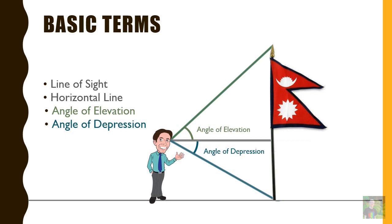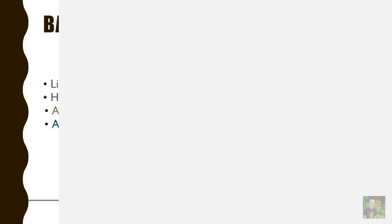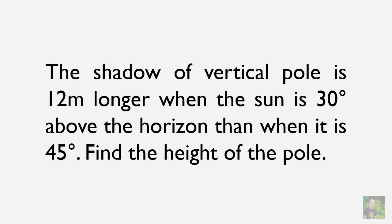Now, to understand more of height and distance, let's try to solve some questions. The first question is: the shadow of a vertical pole is 12 meters longer when the sun is 30 degrees above the horizon than when it is 45 degrees. Find the height of the pole.